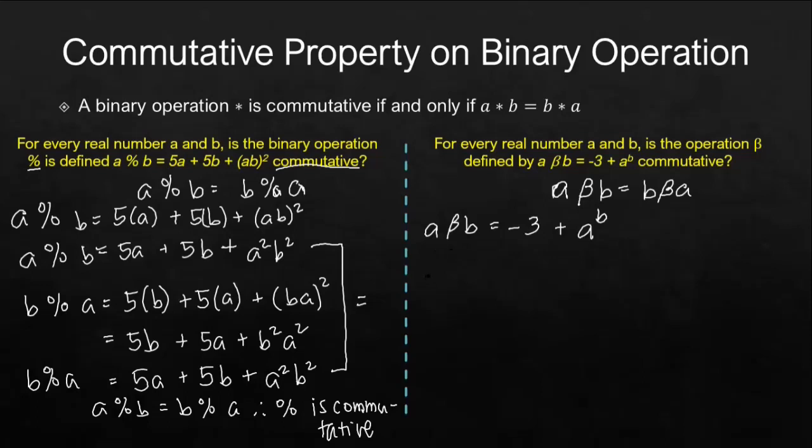Let's start with the second side of the equation. We have b beta a. This time we still have negative 3 plus. However, this first number which is b will be the base and a here will be the exponent.